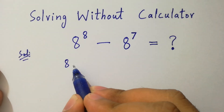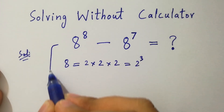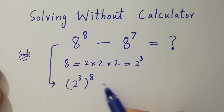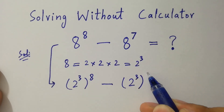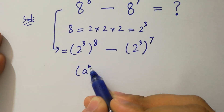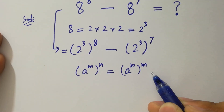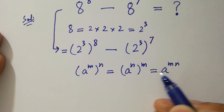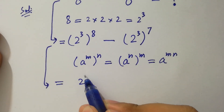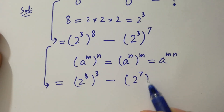Since 8 equals 2 times 2 is 4, 4 times 2 is 8, equal to 2 cubed. Then it will be 2 cubed to the power 8 minus 2 cubed to the power 7. Using the rule that a to the power m, to the whole power n, equals a to the power mn, we can write it as 2 to the power 8, to the whole power 3, minus 2 to the power 7, to the whole power 3.